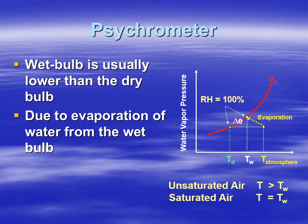The wet bulb temperature is greater than the dew point. The dew point is another method to reach saturation: you keep the water vapor in the air constant and reduce temperature until saturation is reached. On the graph, this means moving horizontally from the yellow dot at T_atmosphere to the left, holding water vapor pressure constant, until you reach the red saturation line — where dew forms on all surfaces. The dew point is at 100% relative humidity.